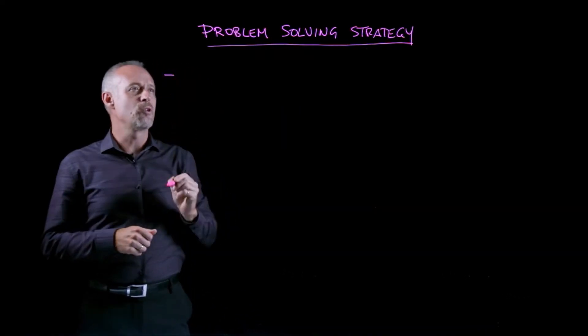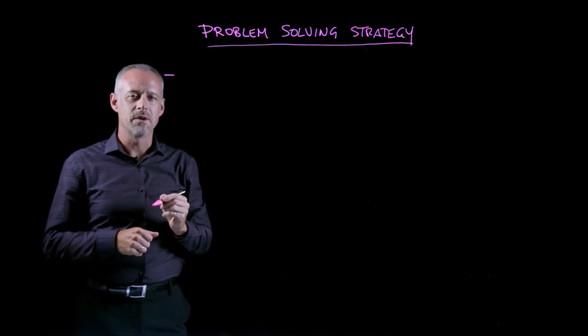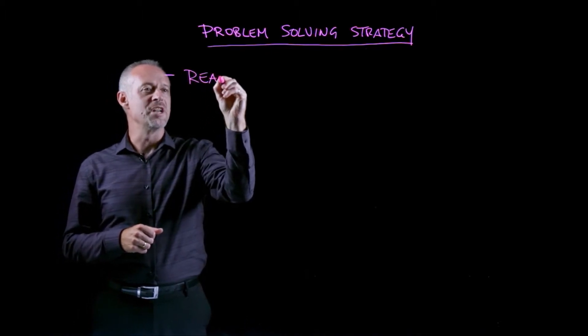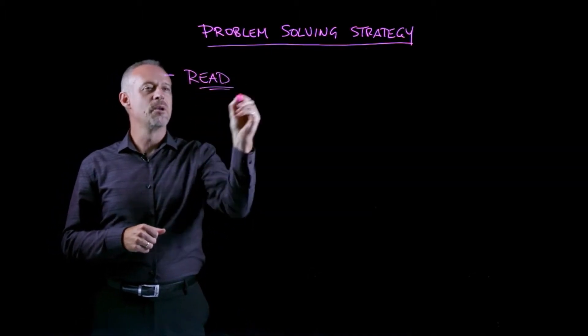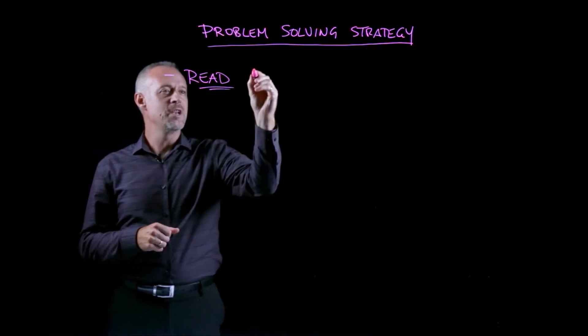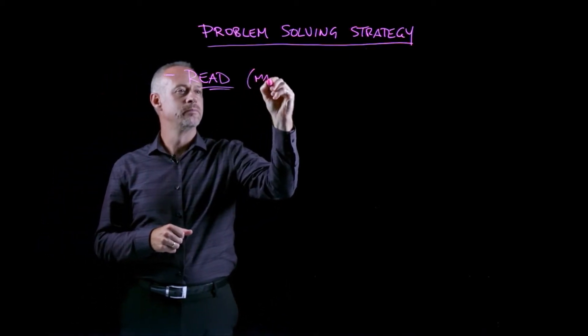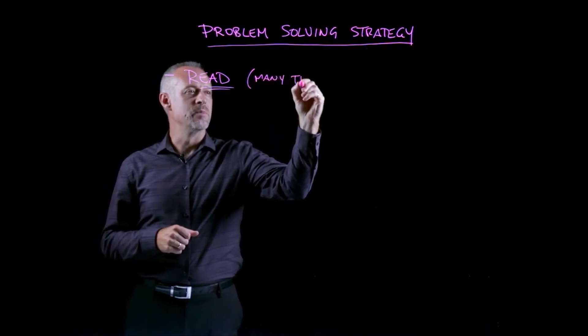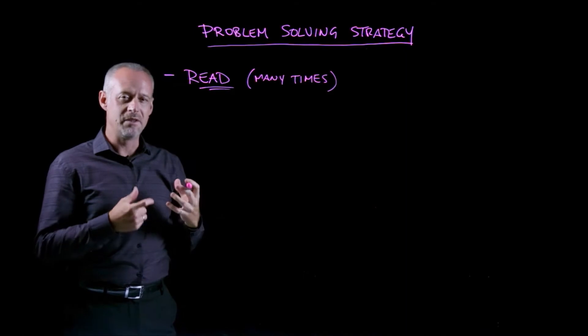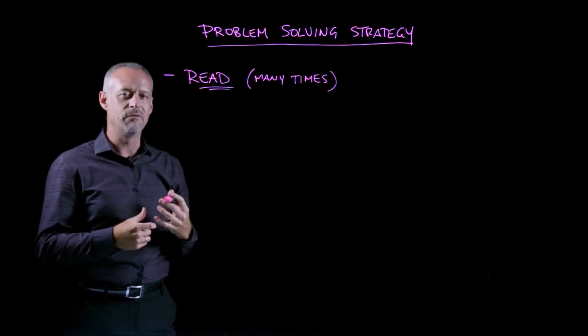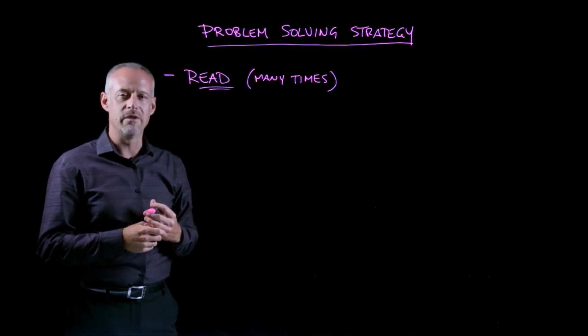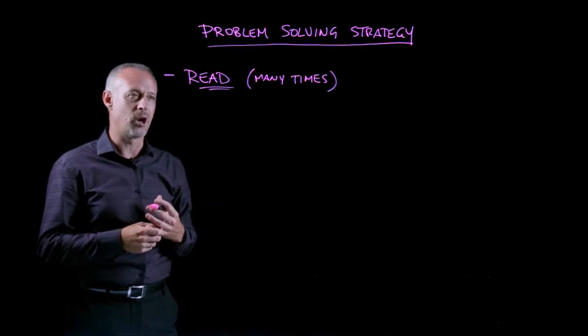And the first step in solving an engineering economics problem is really about reading. So, read the problem, and don't just read it once. Read the problem many times, because the problems in engineering economics are very densely packed with information, so it's rare to take out all of the information you need in the first read of a problem.